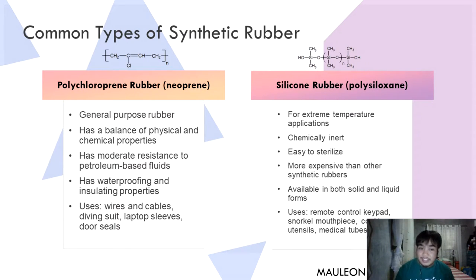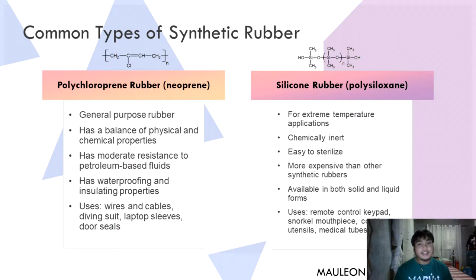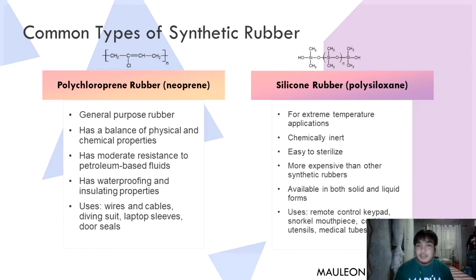Next is polychloroprene rubber, or neoprene. It is a general-purpose rubber with a balance of physical and chemical properties. It has moderate resistance to petroleum-based fluids and also has waterproofing and insulating properties. It is commonly used on wires and cables, diving suits, laptop sleeves, and door seals.